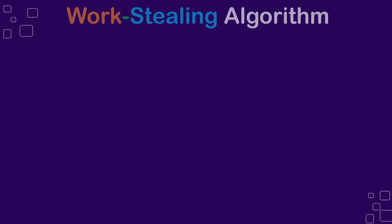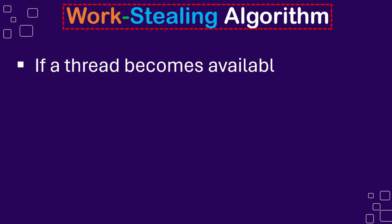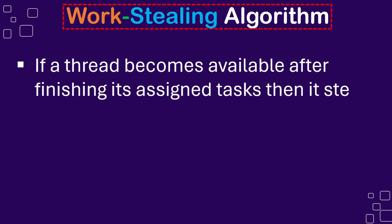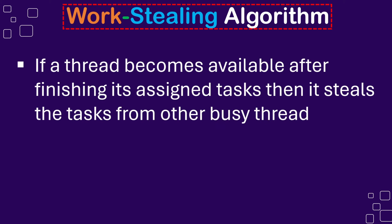This is exactly how the work stealing algorithm works. In the fork join pool, if a thread becomes available after finishing its assigned tasks, it steals tasks from other busy threads' queues. In this way, it helps in maximizing CPU utilization and improves the overall task performance of the system.